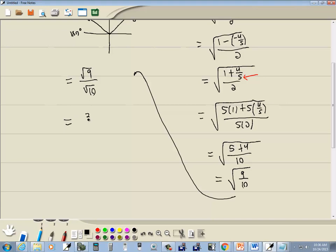Square root of 9 is 3. And we can't have a square root in the denominator so multiply top and bottom by the square root of 10 to get rid of that. Up on top that becomes 3 square root of 10. And down below square root of 10 times square root of 10 gives us 10.